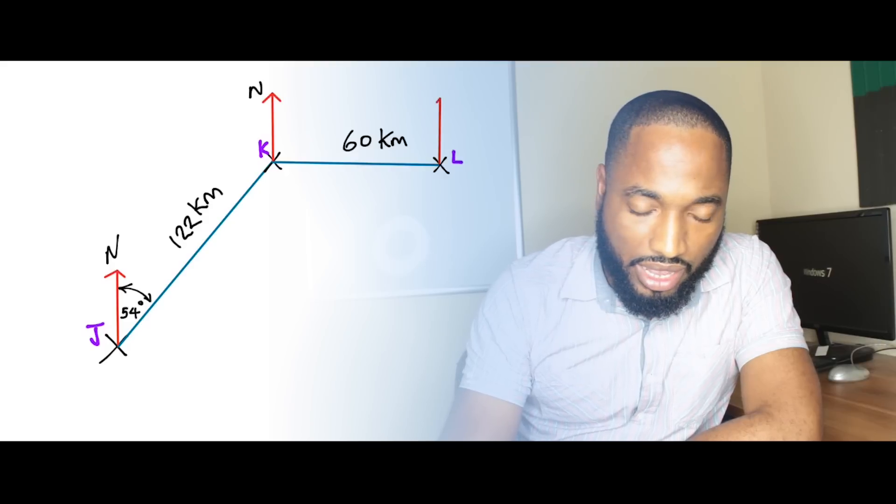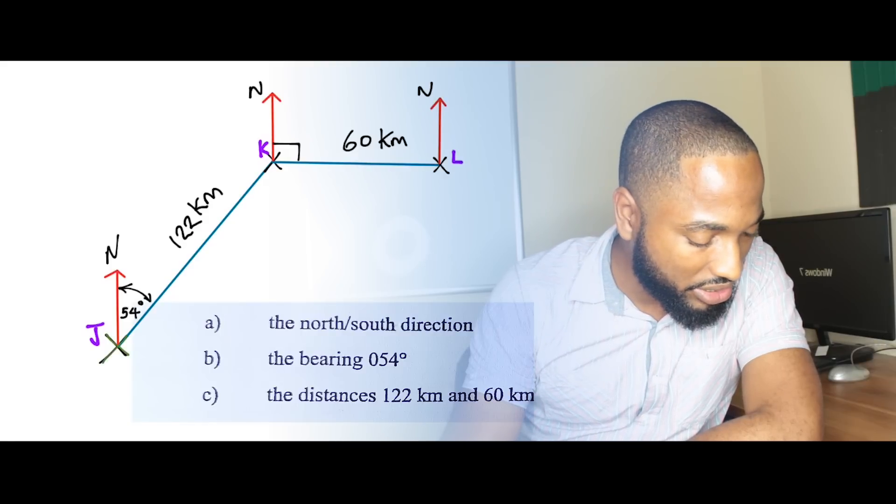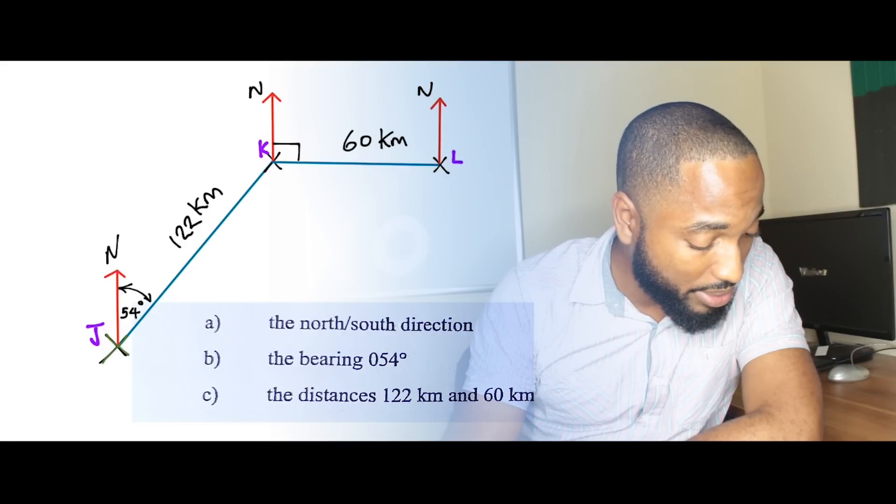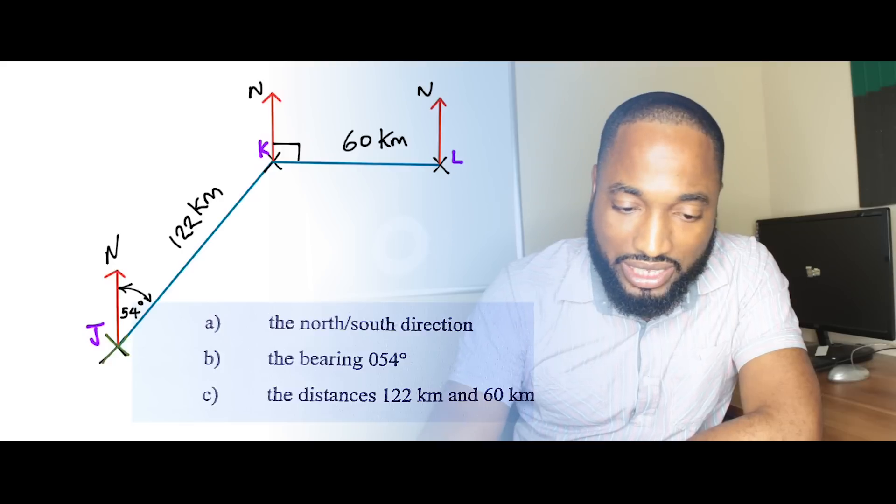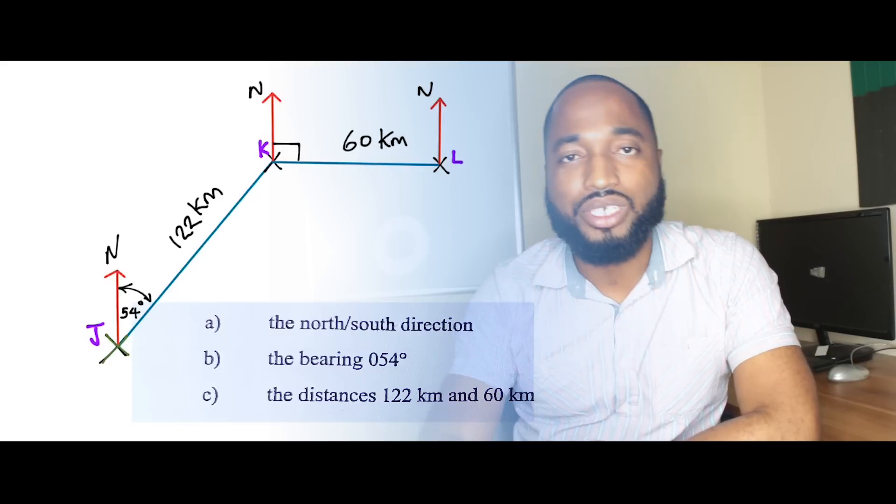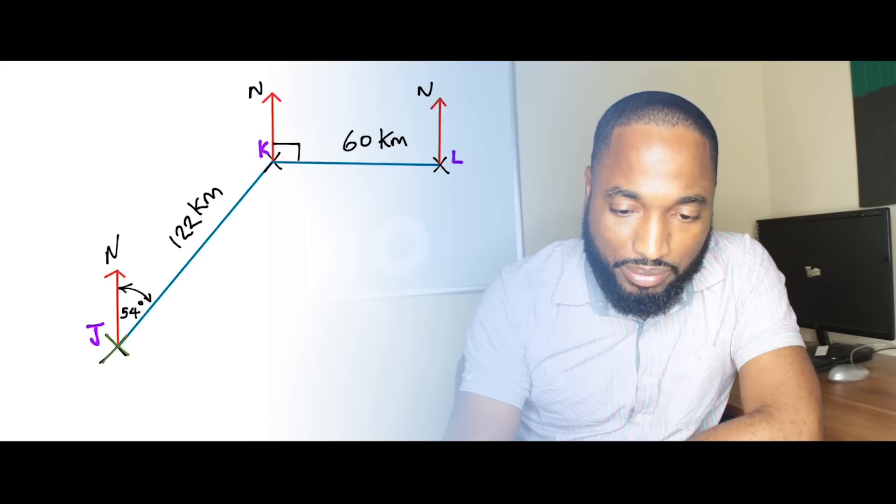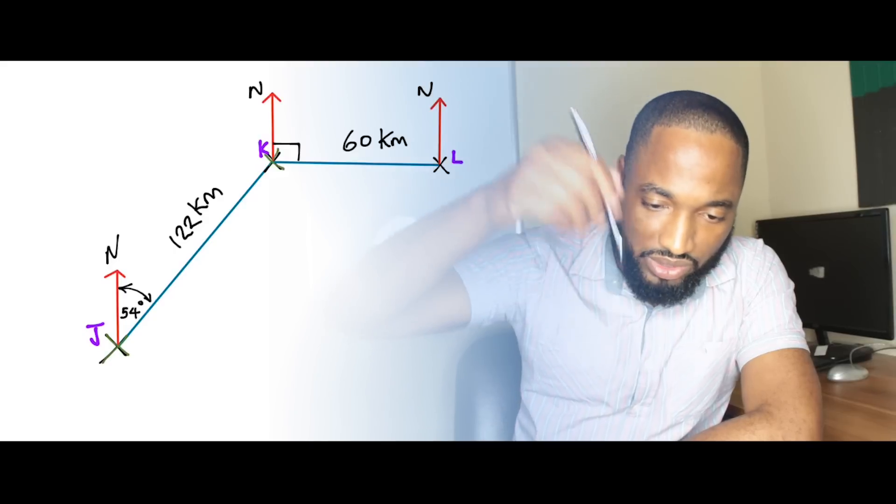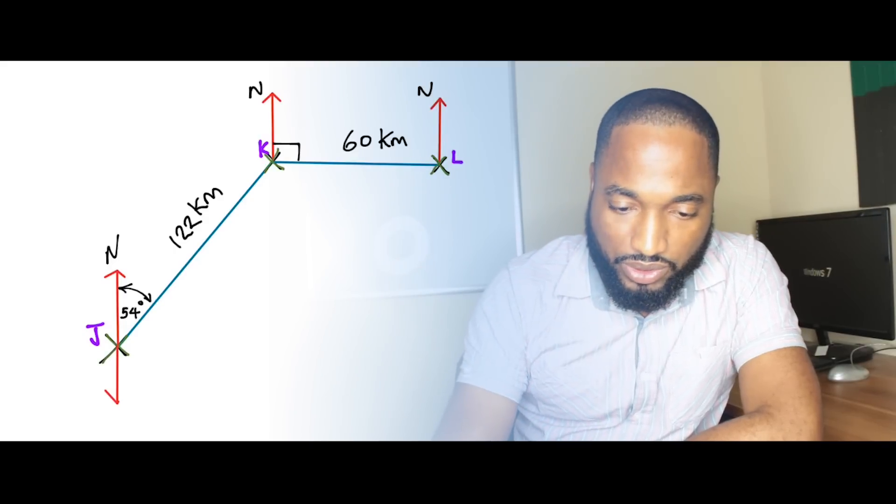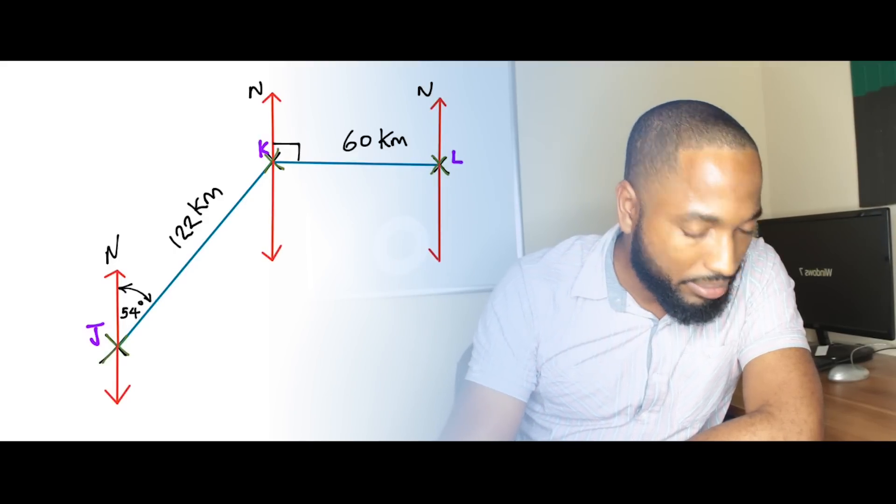Put in your point L. The question asks us to show the north, south direction, show the bearing, show the distance. We showed everything except the south. So they requested the south. Well, let me give them the south. South is going downwards on your diagram. So south, south, south. Bam. Three marks.